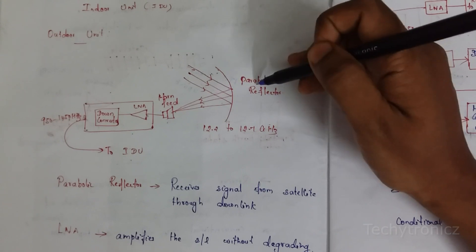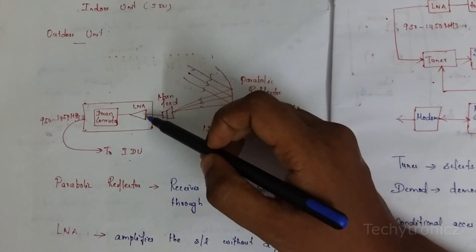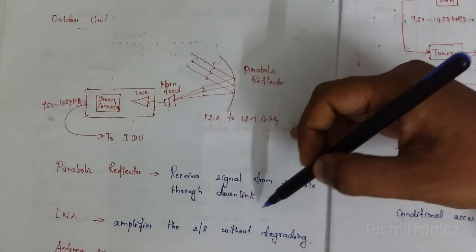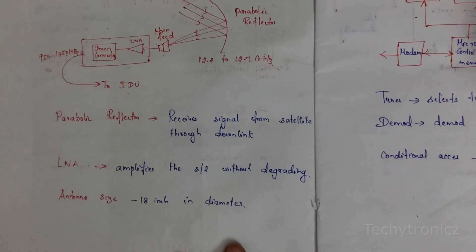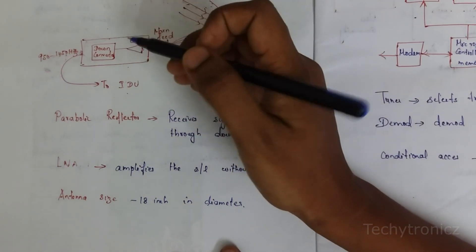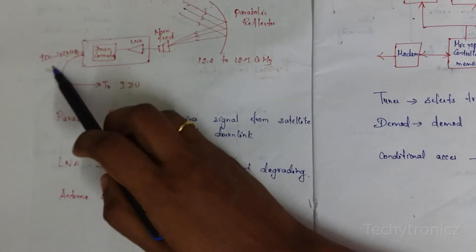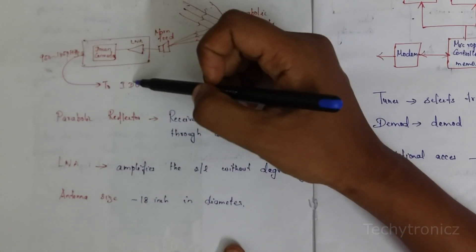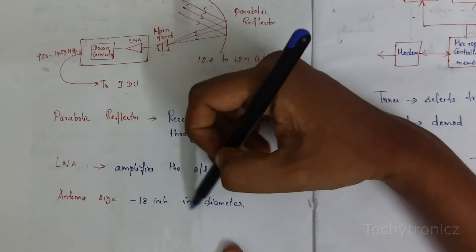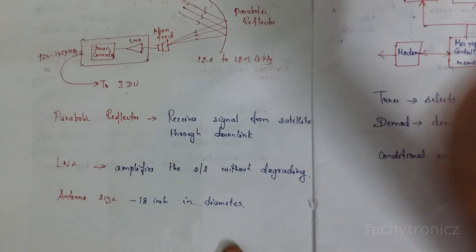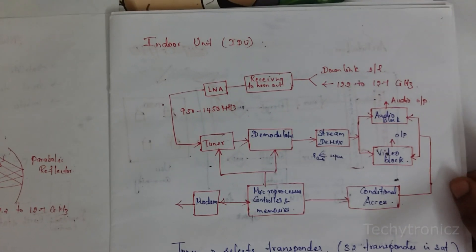In the outdoor unit, the signal received by the parabolic reflector is passed to the horn feed and then to the low noise amplifier, which amplifies the signal without degradation. The down converter then down-converts the frequency from 950 to 1450 MHz and gives the signal to the indoor unit. The antenna size is 18 inches in diameter.